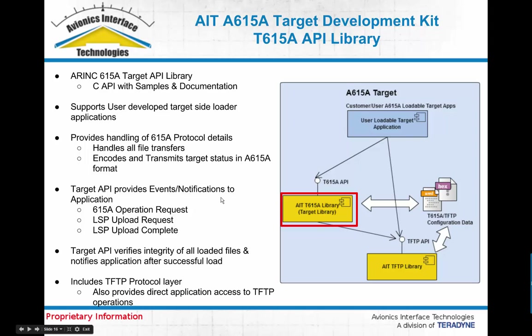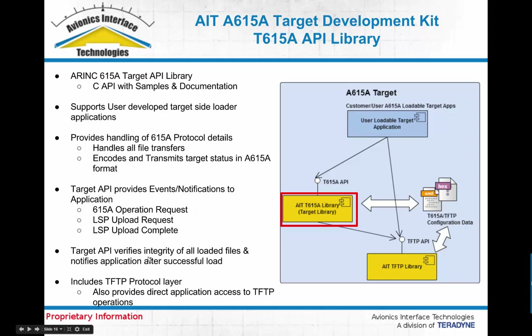Some of the events and notifications provided by the API include an event to notify the application when an operation is requested — when a user of a data loader connects and tries to request an operation. It also provides an indication when an upload has been requested, telling you what LSPs that upload is requesting to load, and then an indication of when the load is complete. After all files have been transferred, the target API will also check CRCs against the header files and indicate to the application whether they're okay or not.